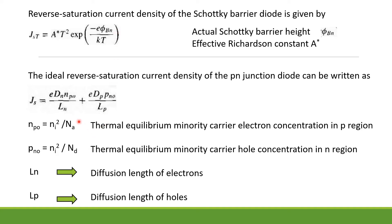The ideal reverse saturation current density of a P-N junction diode is given by JST equal to (eDN·npo / LN) + (eDP·pno / LP), where npo equals ni² / NA is the thermal equilibrium minority carrier electron concentration in the P region, pno equals ni² / ND is the thermal equilibrium minority carrier hole concentration in the N region, and LN and LP are the diffusion lengths of electrons and holes respectively.